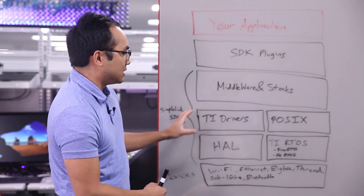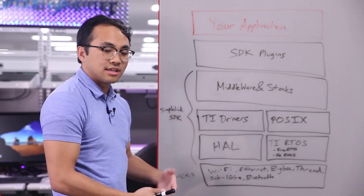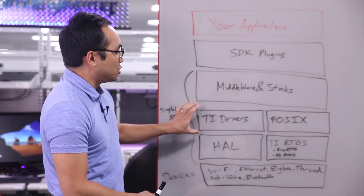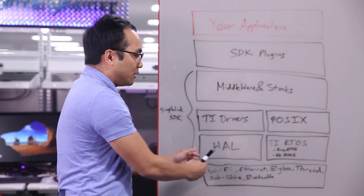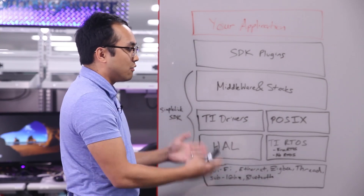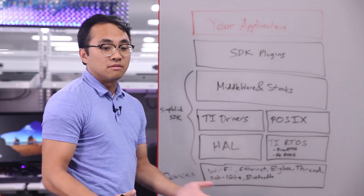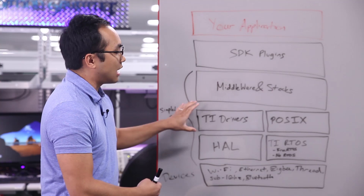Some of the key components of the SimpleLink SDK are TI Drivers — a collection of intuitive APIs for accessing things like I2C, SPI, UART, and other common peripherals. By providing intuitive, code-portable APIs, this allows developers to write their application once for Ethernet, for example, and easily port it to Wi-Fi, ZigBee, Thread, or any form of connectivity. This enables 100% code portability on any application code built on top of TI Drivers.